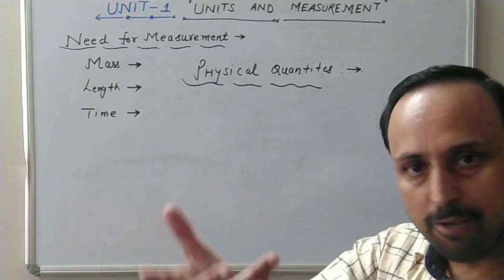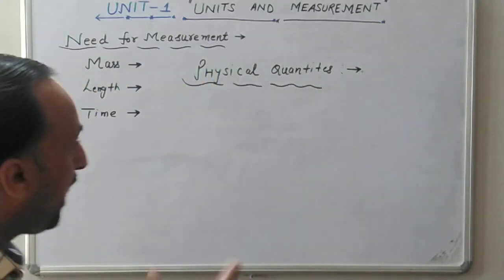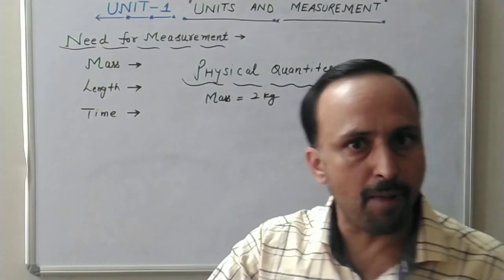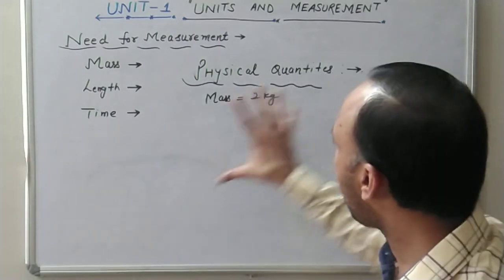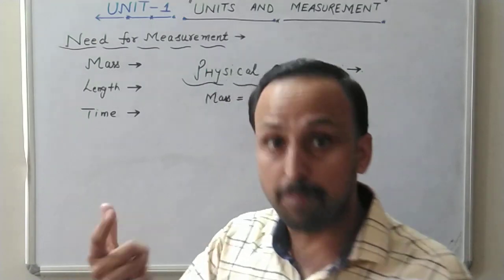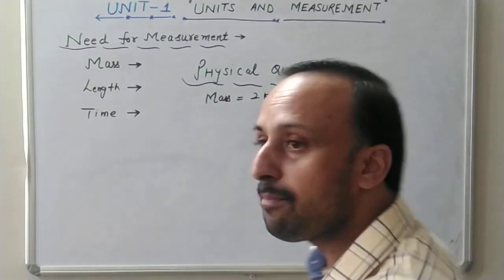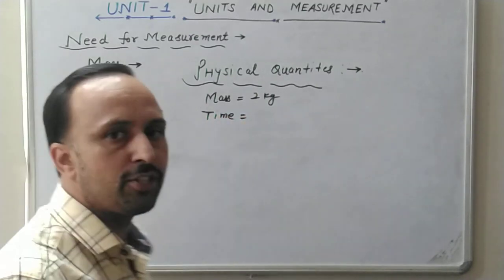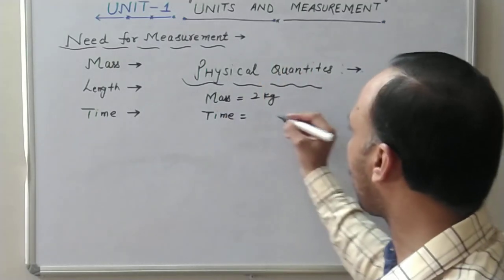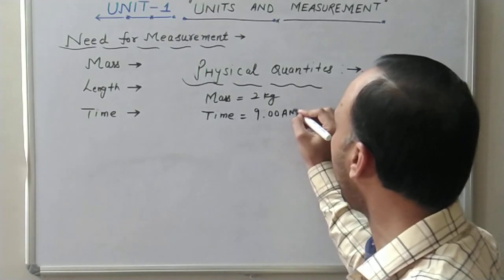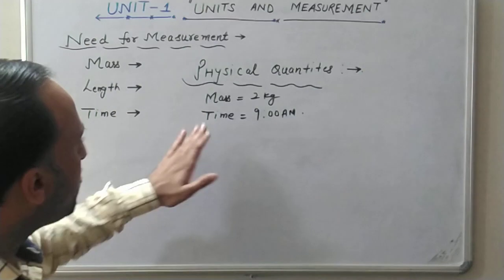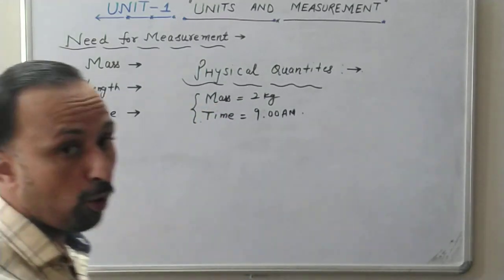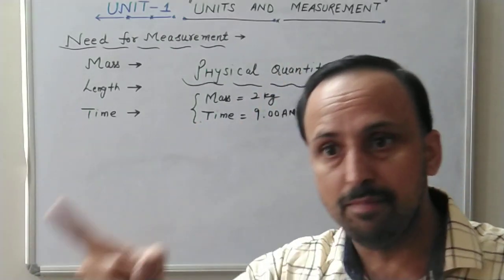Quantities that you can either directly or indirectly measure are called physical quantities. For example, you can directly measure mass — mass is equal to two kilograms. When you go to a shopkeeper, they have a balance. They place the item on the balance and the mass comes out to be two kilograms — that is a direct measurement using a spring balance. Similarly, time is measured directly. There is a clock in front of you, you look at it and it says nine o'clock — nine a.m. in the morning or nine p.m. in the evening. So a quantity is said to be a physical quantity if it can be measured directly or indirectly.